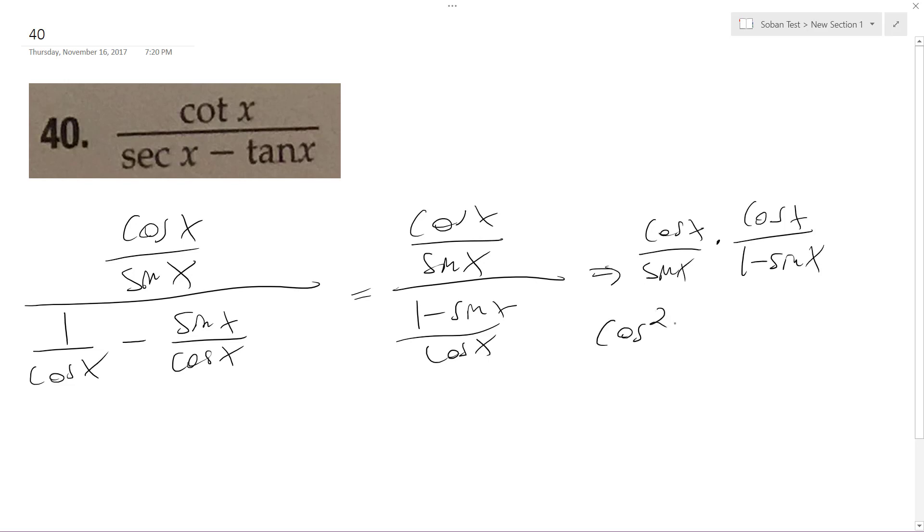So this becomes cosine squared x over sine x, leave this in separate form though, you'll see why. So this becomes,